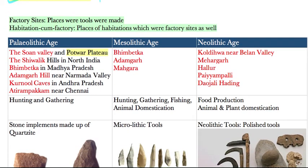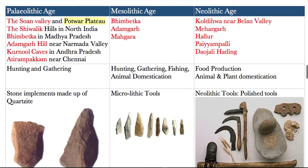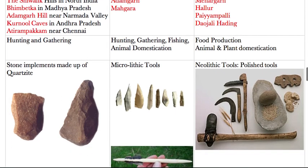A factory site is a place where ancient humans used to chip stone to make tools. There were also habitation-cum-factory sites — places where people both lived and made tools. The Stone Age of India is divided into three parts: the Paleolithic age, the Mesolithic age, and the Neolithic age. The Paleolithic age can be further divided into three parts, though those details are not critical for exam preparation.